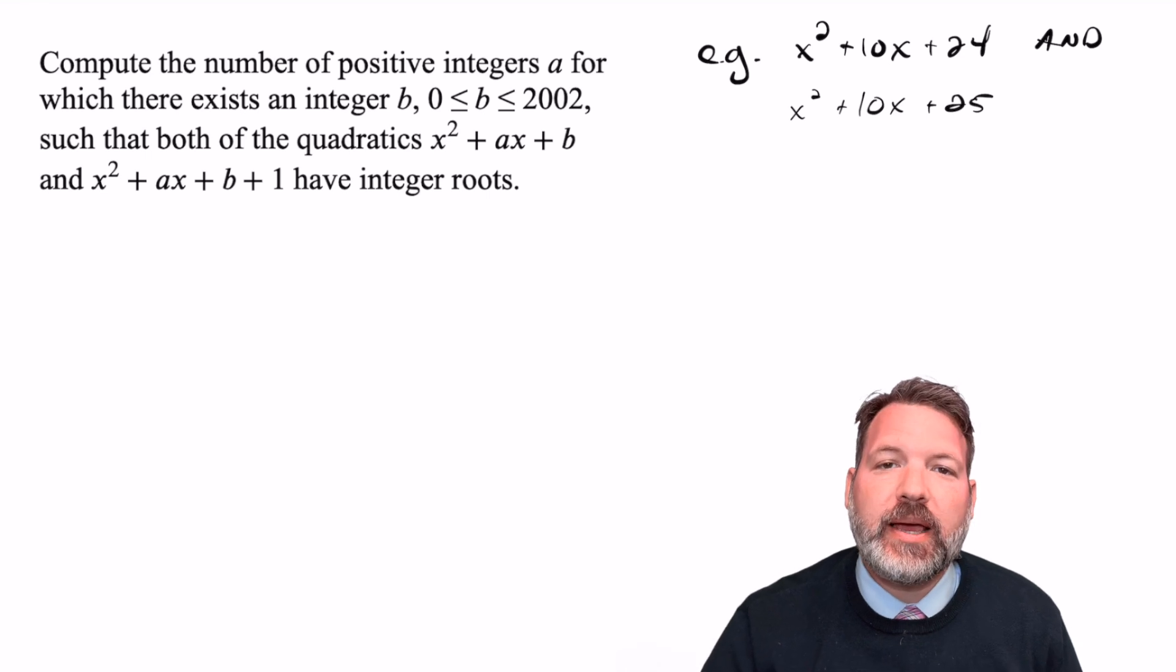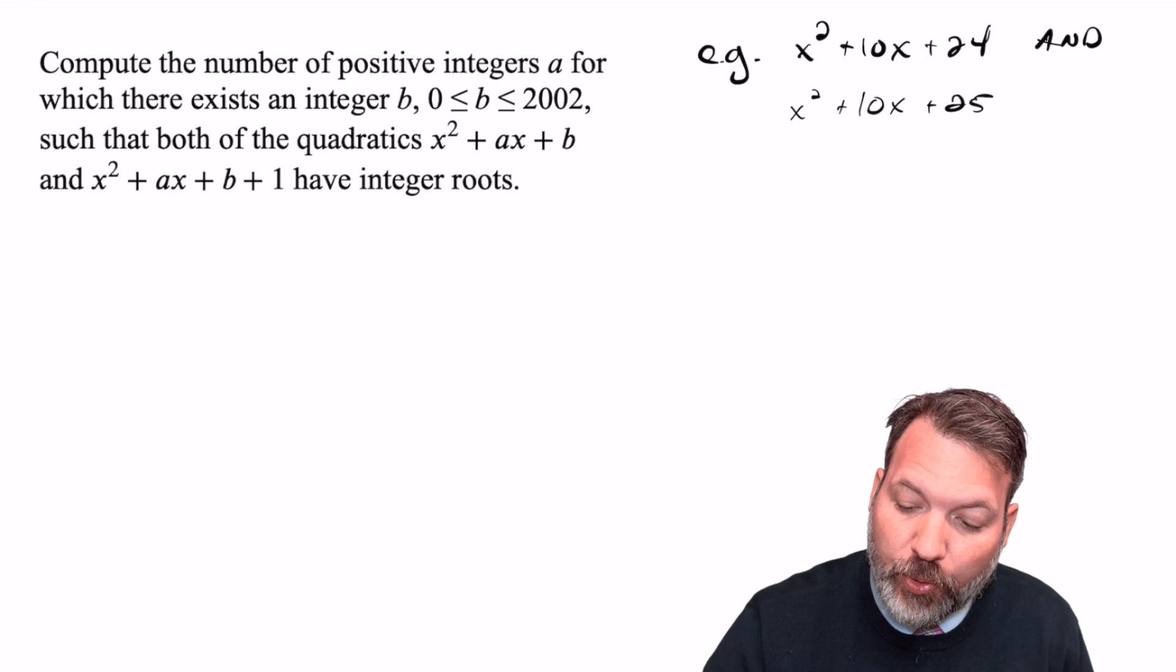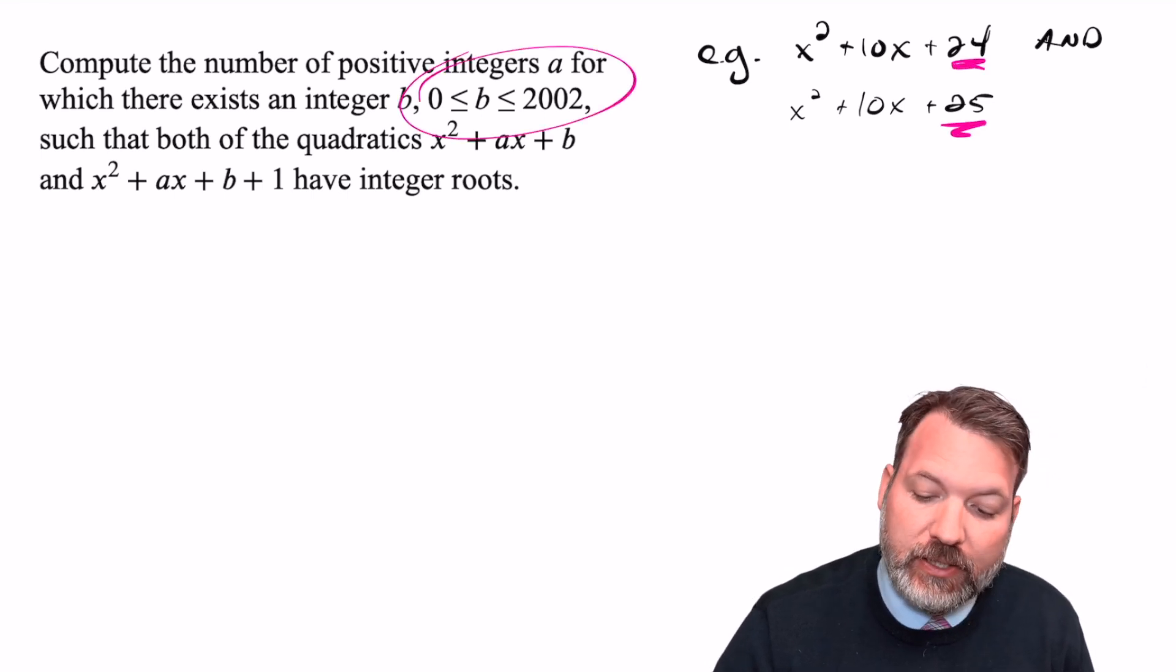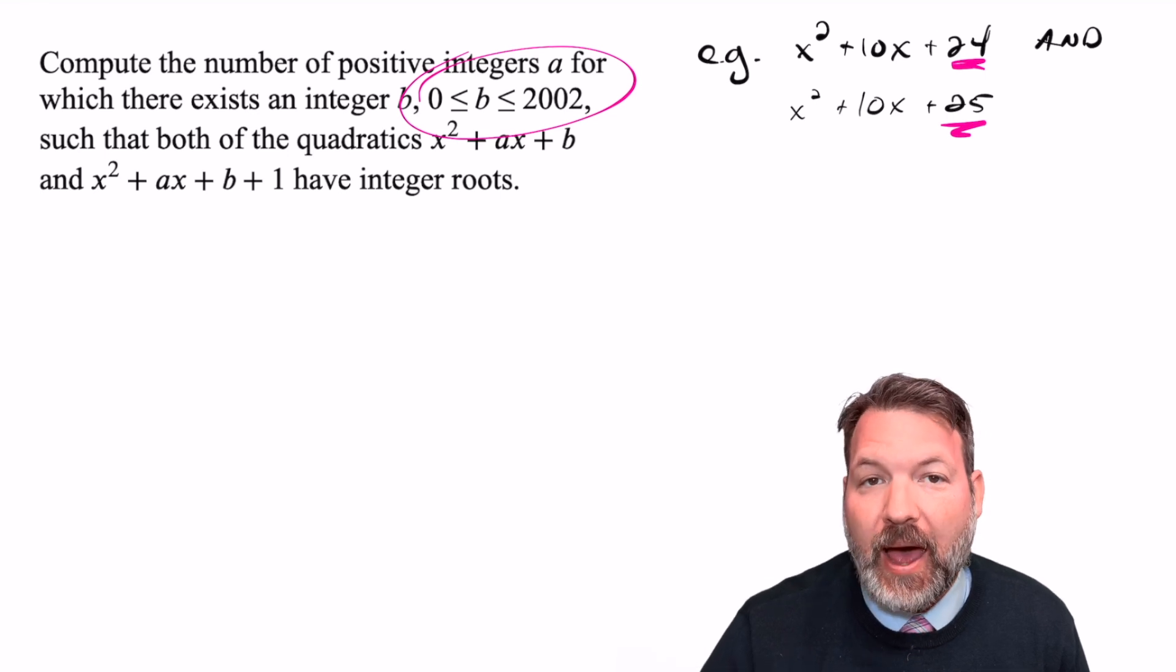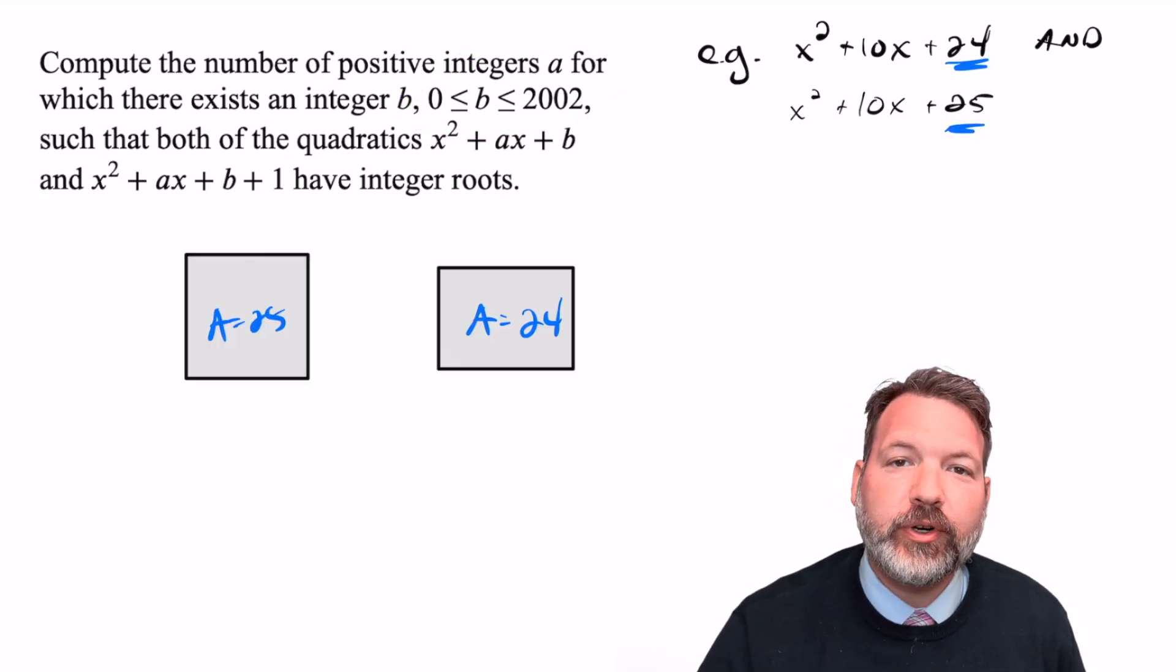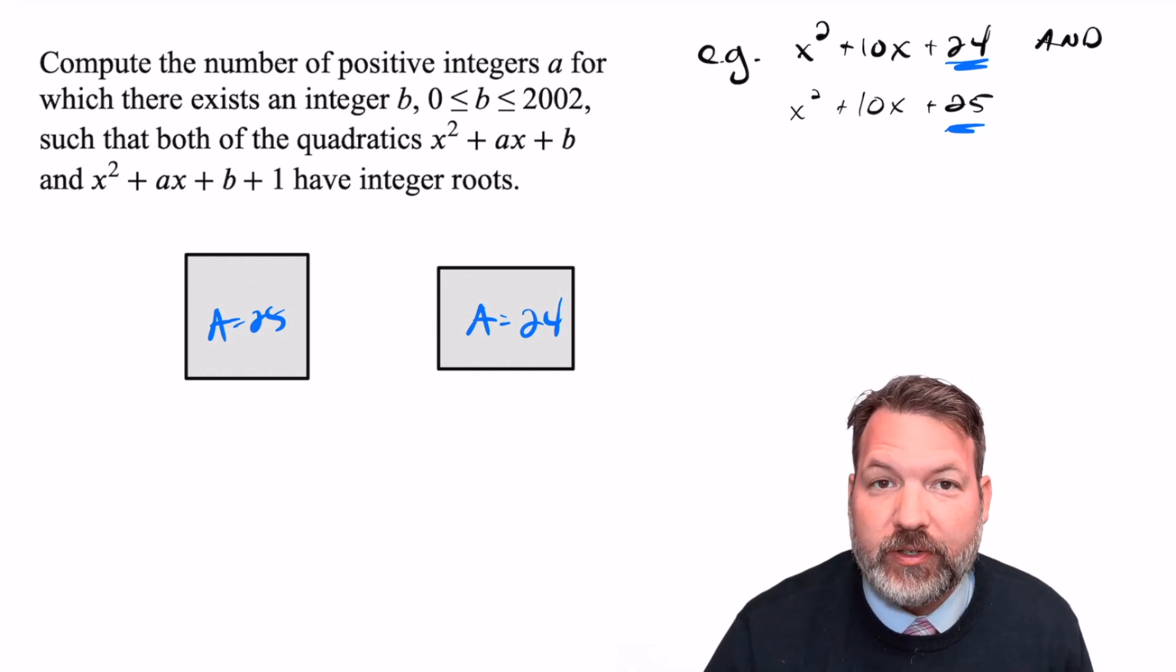With that concrete example under our belt, the question becomes how often does this happen? We've come up with one example, but they asked us how many different b there are less than or equal to 2002 where this same thing happens.